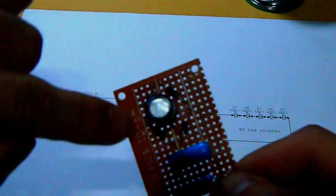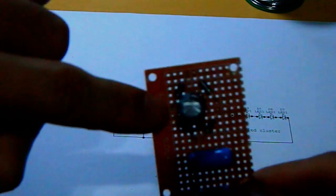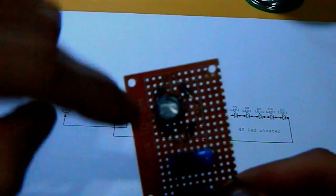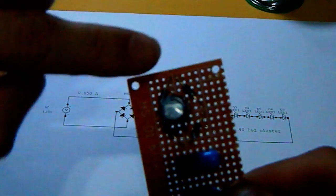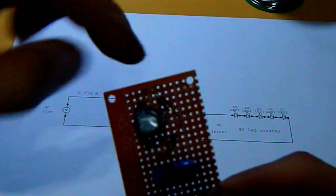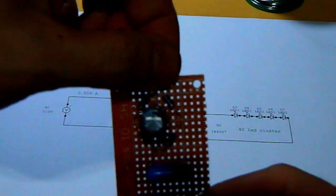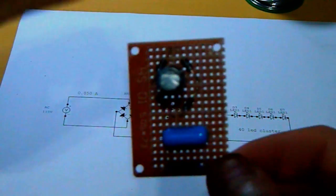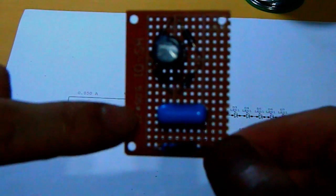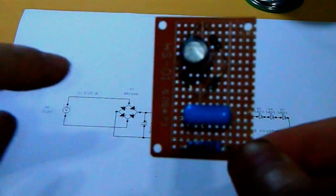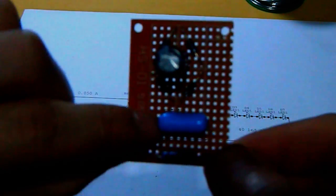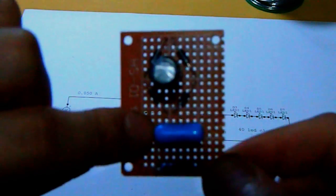On the top goes out the negative for the LED cluster. And from here you get the positive rail of the DC.